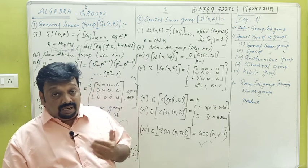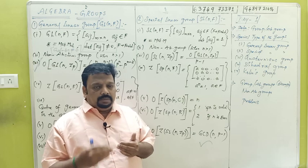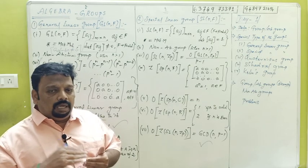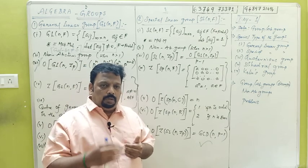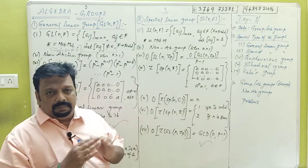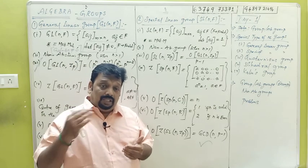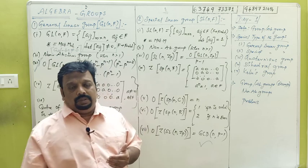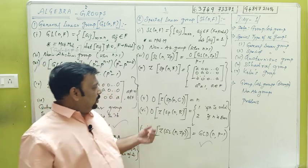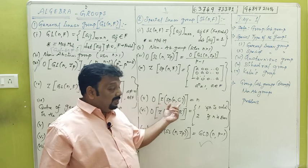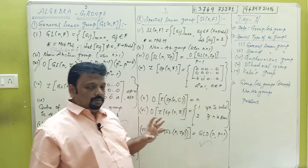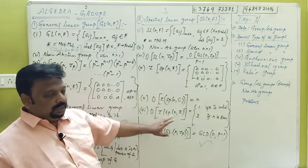The order of the center of G, then the order of the center of the special linear group — the order is p minus 1, and the order is gcd(n, p-1). The order is p minus 1, and the general linear group is really complex.